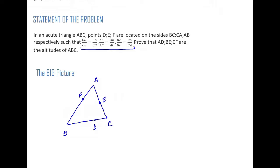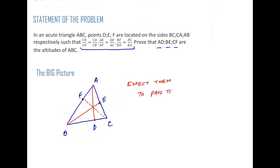Let us see what we have to prove. We want to show that AD, BE, and CF are altitudes of triangle ABC. If you are familiar with Euclidean geometry, you know that altitudes of a triangle are concurrent — they pass through the same point. So we will expect these three lines AD, BE, and CF to pass through the same common point.